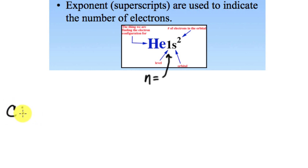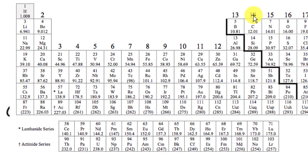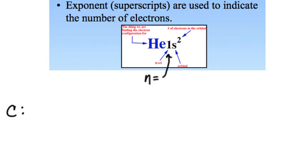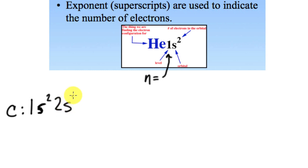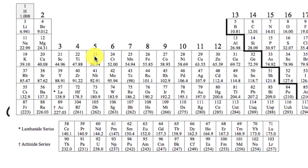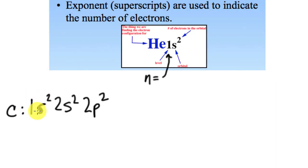If we're going to draw the configuration for carbon, we need to look at the periodic table. Carbon has six electrons, so I need to account for six. I'm going to start with 1s and put two electrons in there. Then I go to 2s and put two electrons there. Then I go to 2p. So 2, 4, 6 — carbon has six electrons: 1s², 2s², 2p².